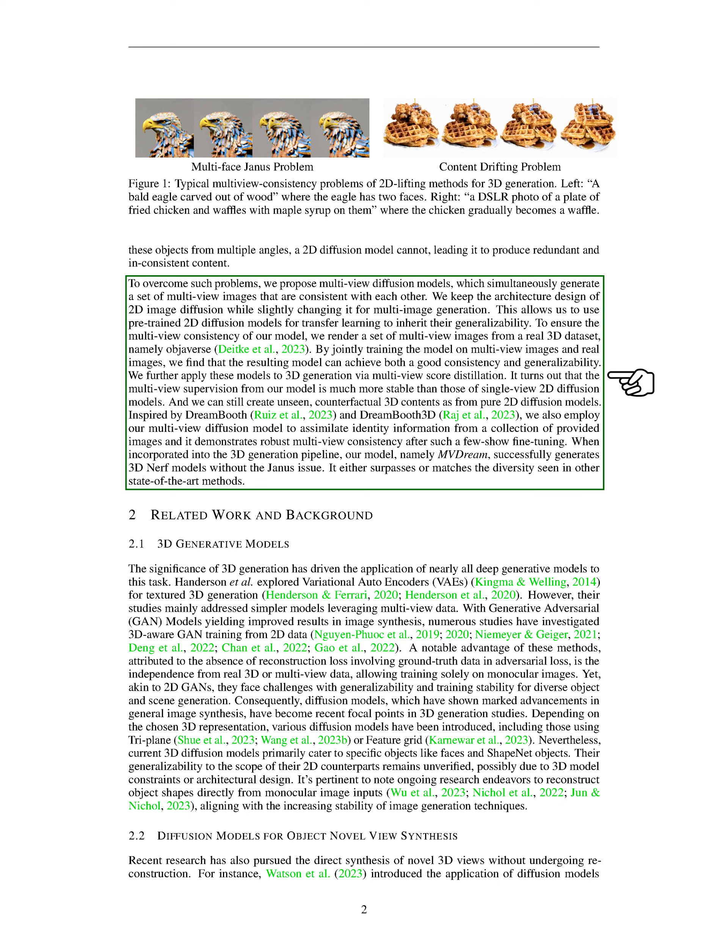We further apply these models to 3D generation via multi-view score distillation. The multi-view supervision from our model is much more stable than that of single-view 2D diffusion models, and we can still create unseen, unique 3D contents as from pure 2D diffusion models. Inspired by Dreambooth and Dreambooth 3D, we also use our multi-view diffusion model to assimilate identity information from a collection of provided images. Our model, which we call MVDream, successfully generates 3D NeRF models without the Janus issue.